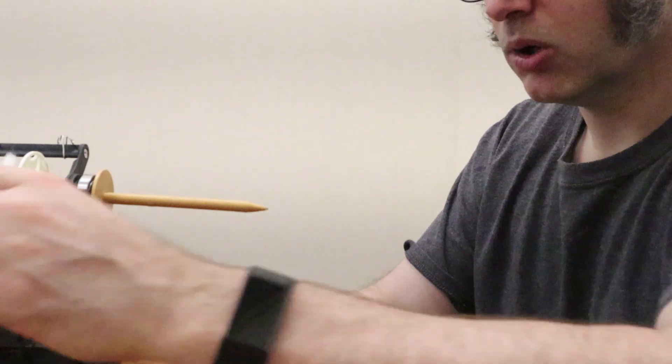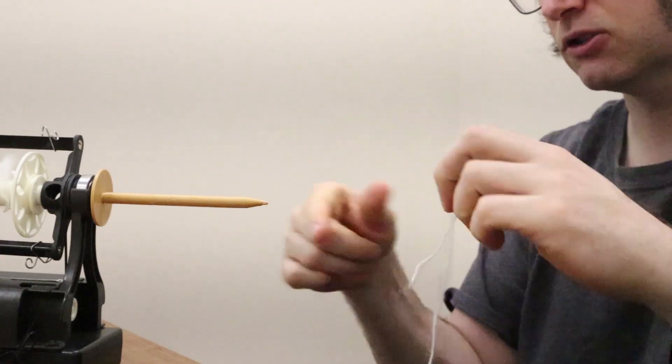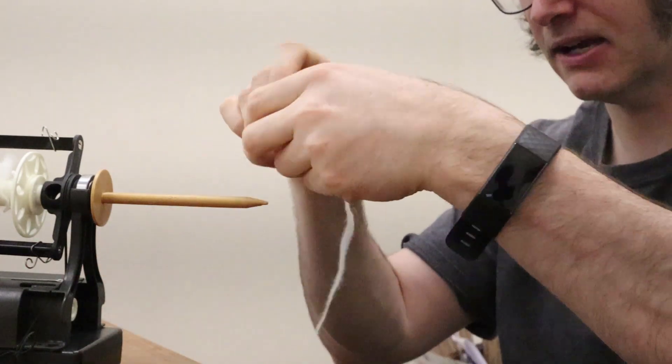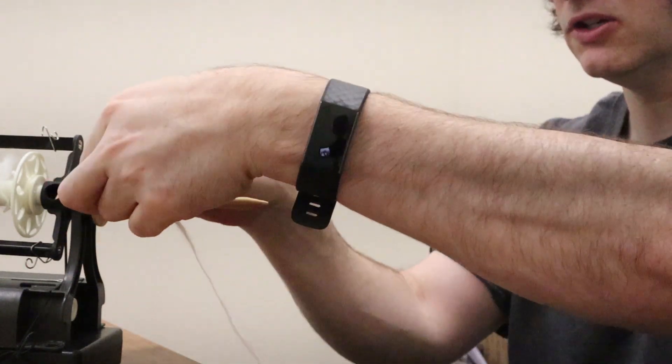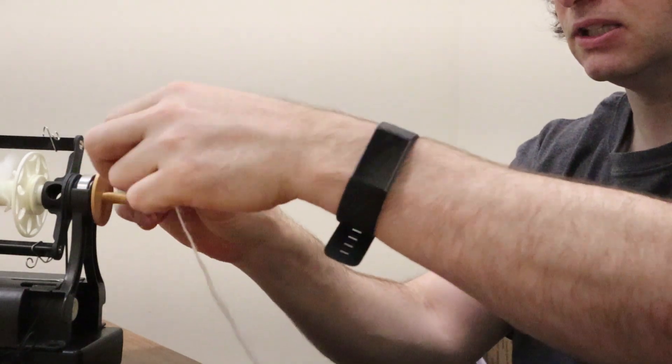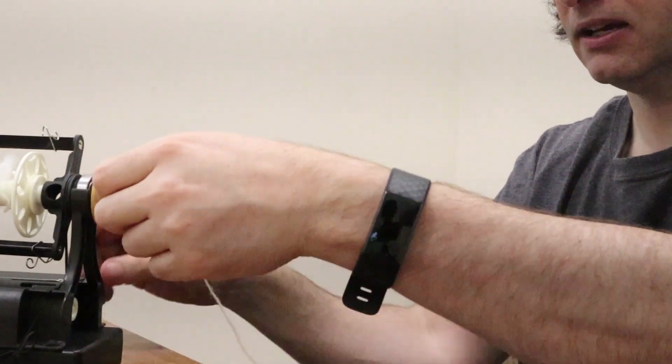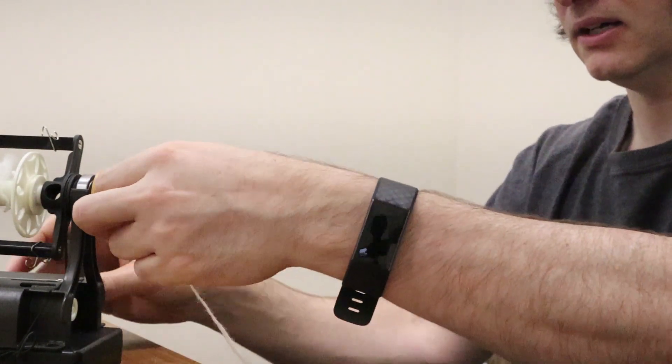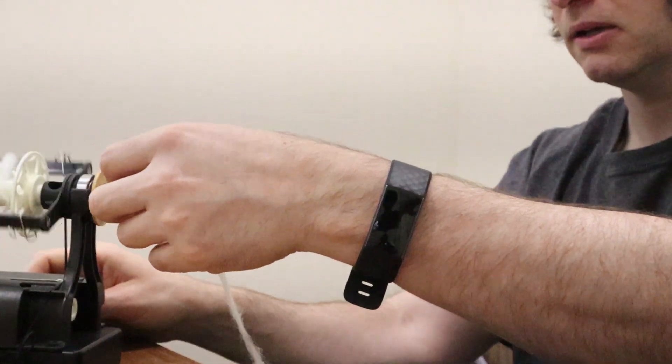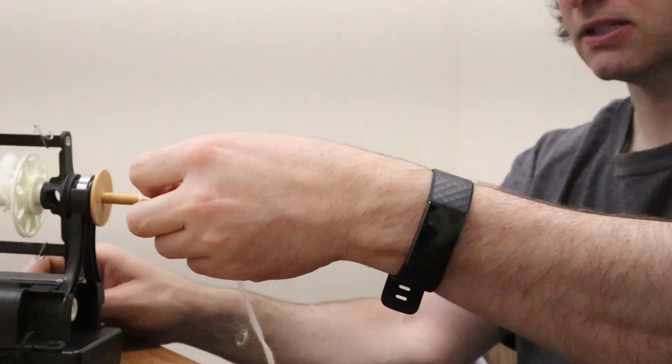Okay, so that's basically how it works. I'm just using the speed control on the Nano to make it spin. All you need is to take a piece of leader yarn, tie it on, and then you sort of get it started.